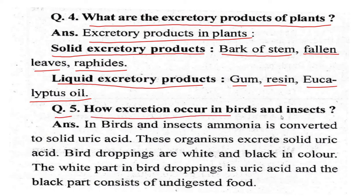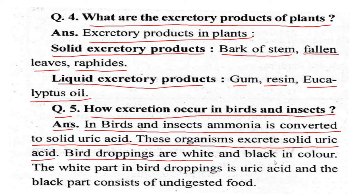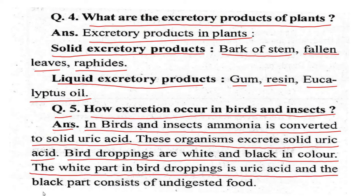Question five: How does excretion occur in birds and insects? In birds and insects, ammonia is converted to solid uric acid, and these organisms excrete solid uric acid. Bird droppings are white and black in color. The white part is uric acid and the black part consists of undigested food.